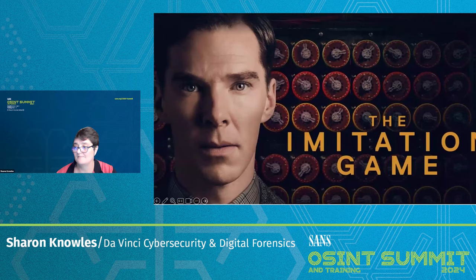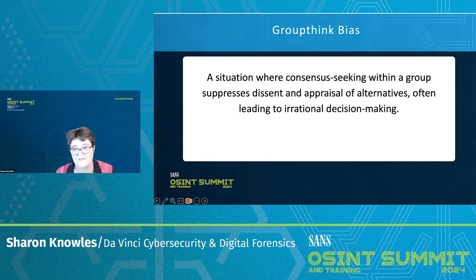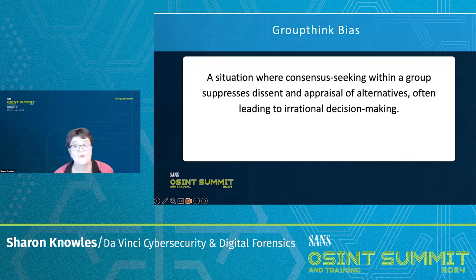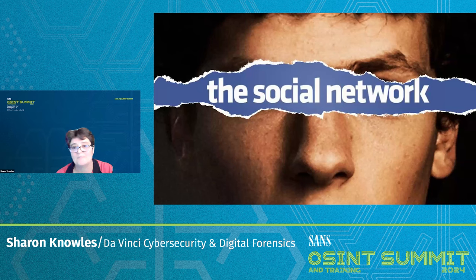Groupthink bias: a situation where consensus-seeking within a group suppresses dissent and appraisal of alternatives, often leading to irrational decision making. An OSINT team might quickly agree on a certain interpretation of data without thoroughly considering other possibilities, due to a desire to maintain harmony. Think about discussions you've had within a team around a case where someone disagreed but ultimately said 'let's just go with that.' The movie here is The Social Network — the early Facebook team made decisions based on group consensus, potentially leading to groupthink where dissenting opinions were suppressed for harmony.